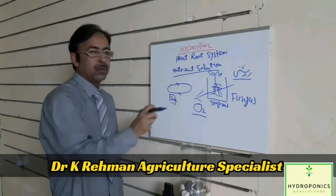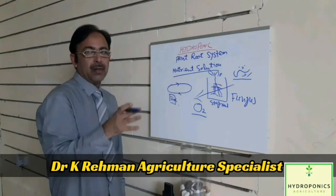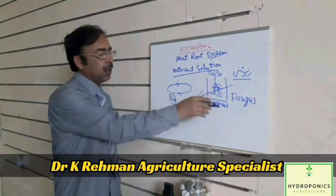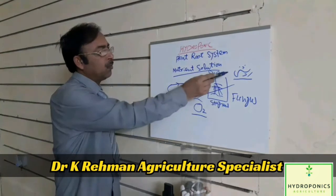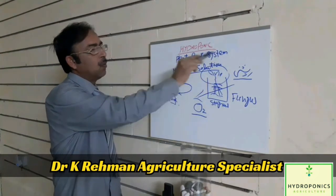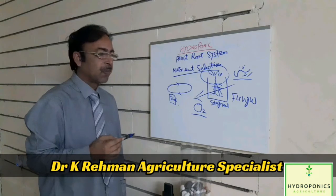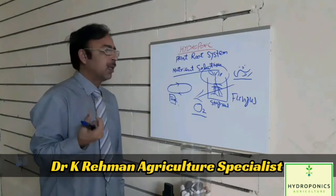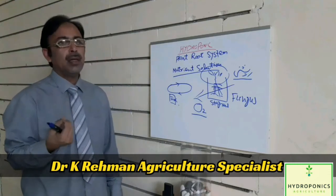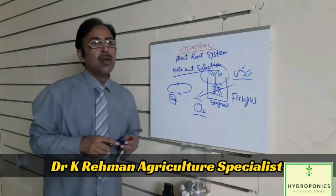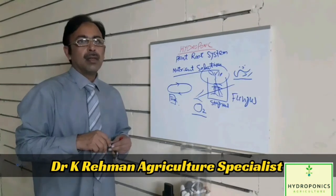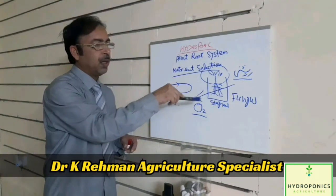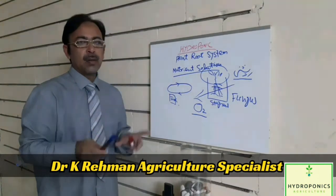Oxygen plays a very important role in the root zone environment. If an adequate amount of oxygen is present in the root system, the root system will grow healthy and absorb more nutrients. And ultimately, the plant health will be good.